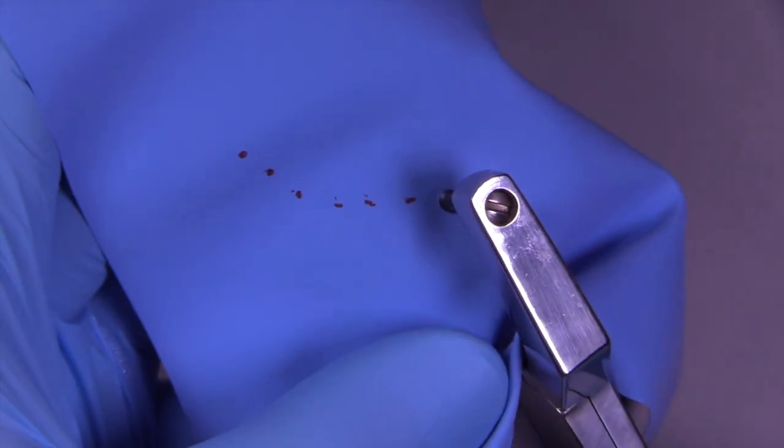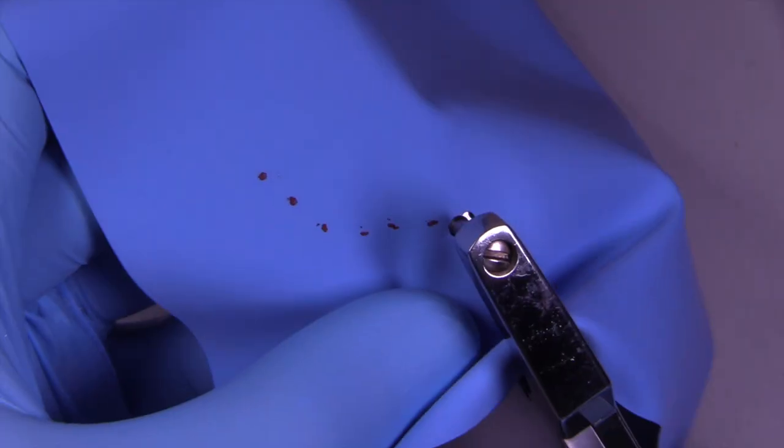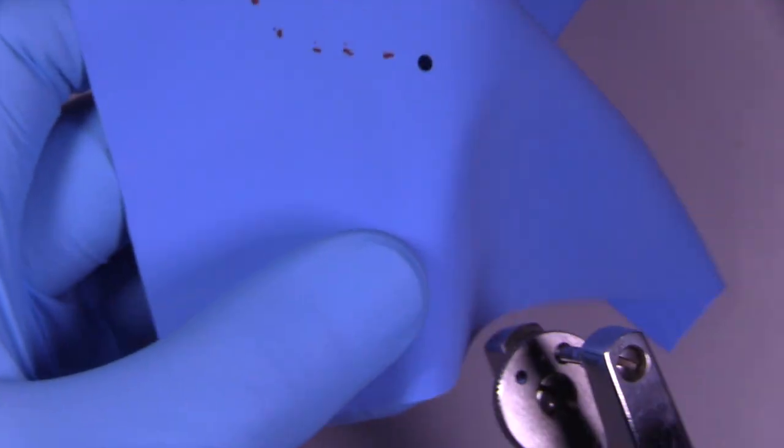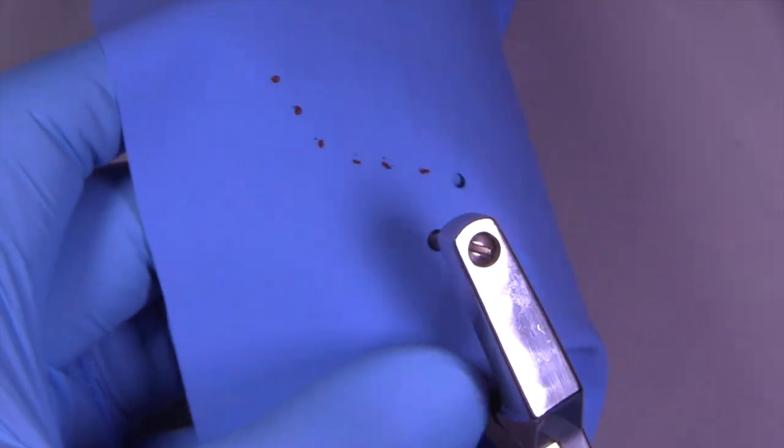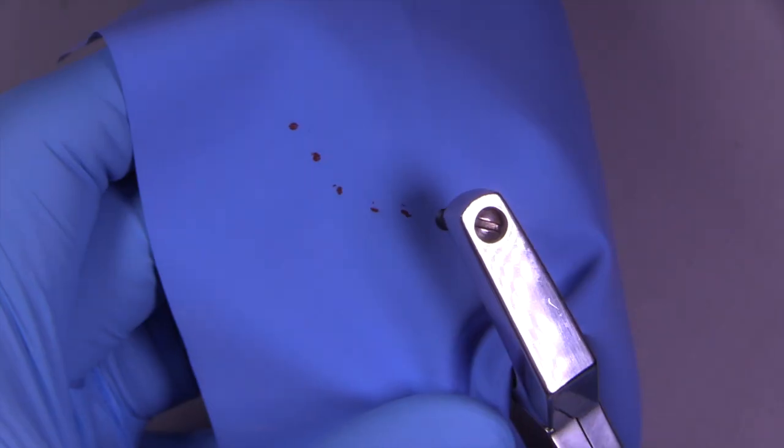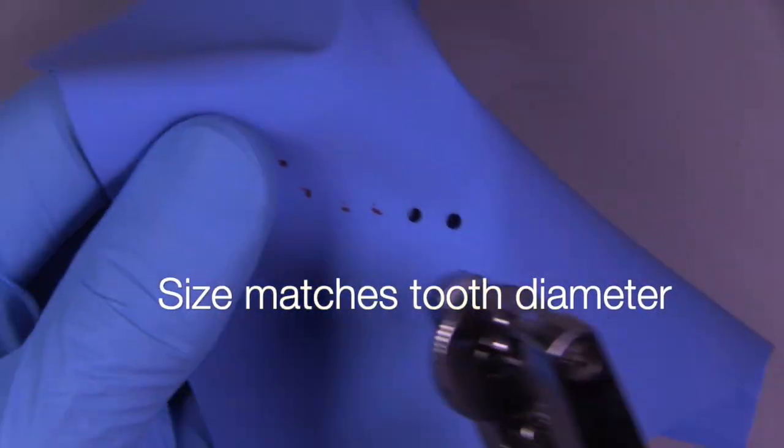will be the middle hole. We can use that hole all the way for the anterior, or we can move it down even further. The key is to try to size it so that the hole matches the diameter of the tooth. You can see I'm just working my way across like this. I don't like using